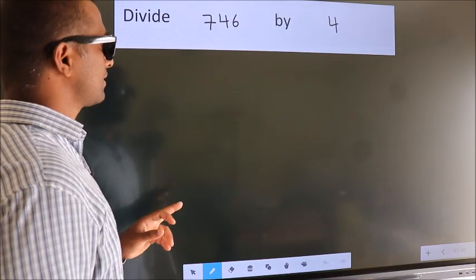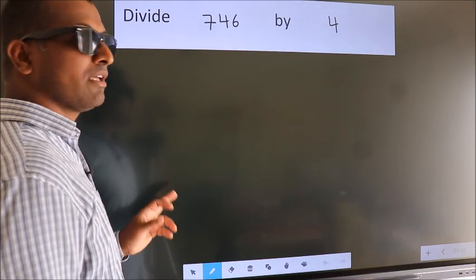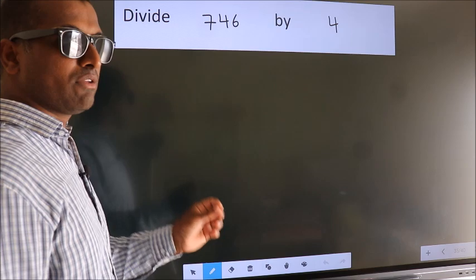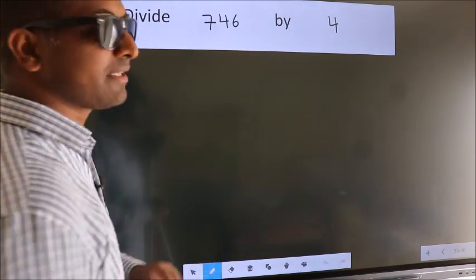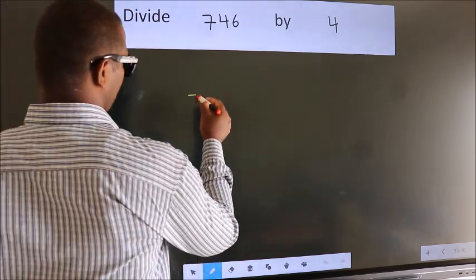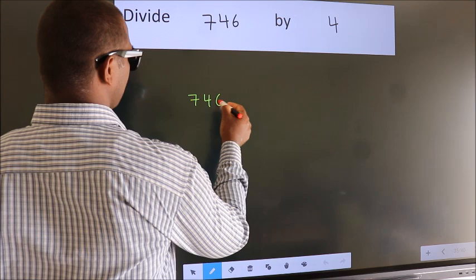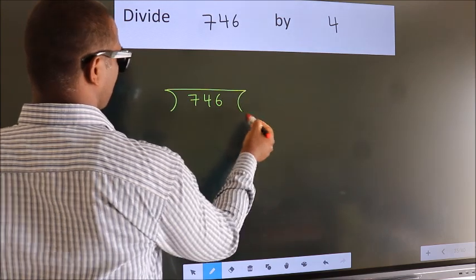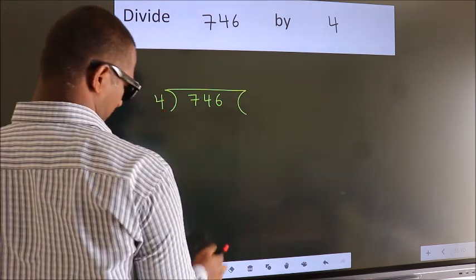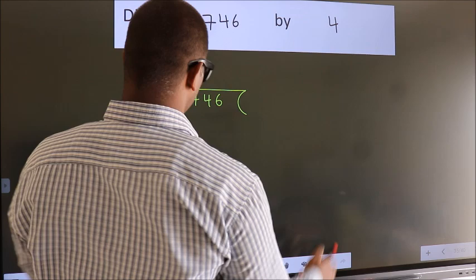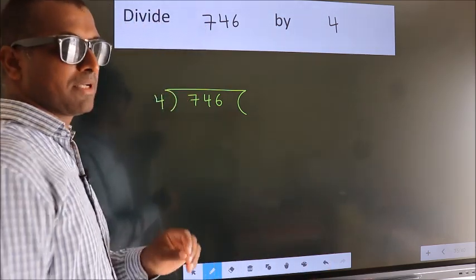Divide 746 by 4. To do this division, we should frame it in this way: 746 here, 4 here. This is your step 1.